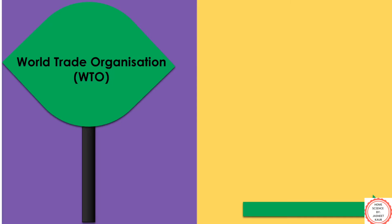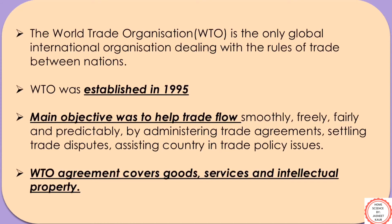Let's move to the third organization, World Trade Organization. WTO is the only global international organization dealing with the rules of trade between nations. World Trade Organization was established in 1995. The main objective of WTO was to help trade flows smoothly, freely, fairly and predictably by administering trade agreements, settling trade disputes, and assisting countries in trade policy issues. WTO agreement covers goods, services and intellectual property. We can implement standards by food control system.